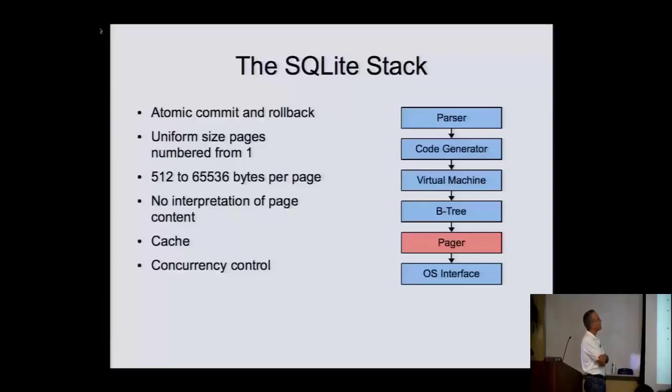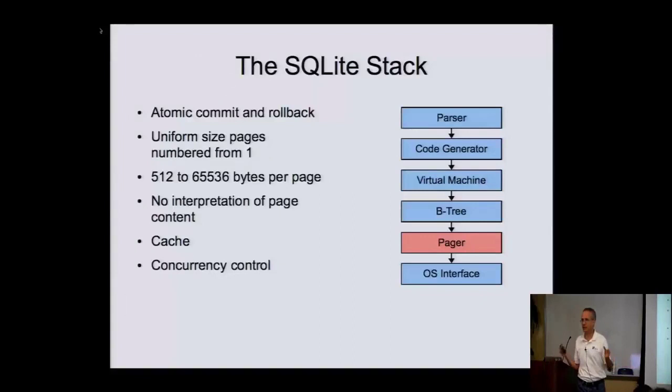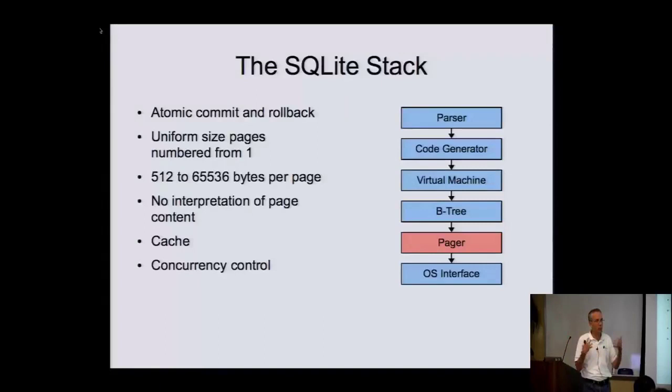Next on down is the pager layer. This is the part that implements your transactions — atomic commit and rollback. The pager views the database as a bunch of pages numbered starting with one, because page zero is like our null pointer. The page size is a power of two between 512 and 64K. The pager has no idea what the content of the page is — it's just managing pages, handing them to the B-tree, and dealing with transactions. It also provides concurrency control, because with SQLite multiple processes can talk to the same database file at the same time with no server controlling them.